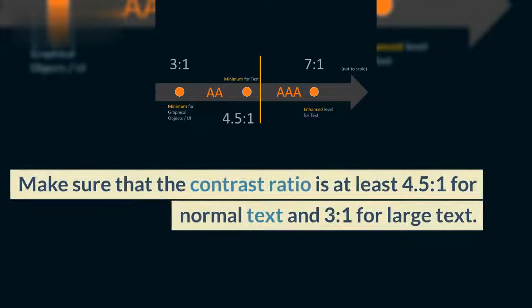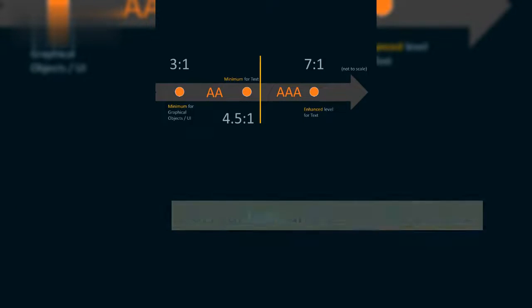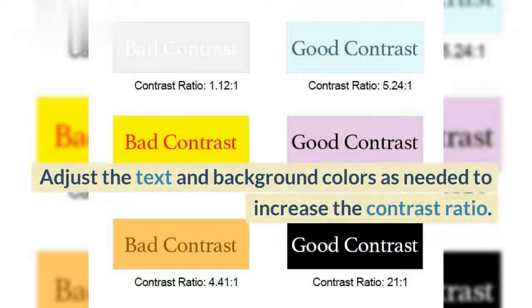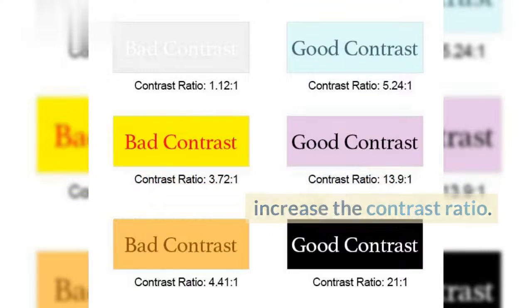Make sure that the contrast ratio is at least 4.5 to 1 for normal text and 3 to 1 for large text. Adjust the text and background colors as needed to increase the contrast ratio.